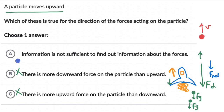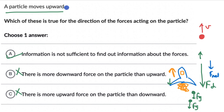So for this one, option A is the correct answer: information is not sufficient to find out the direction of forces. We saw that both cases are completely possible, and neither option B nor C will always be true when a particle is moving upwards. You can try more questions from this exercise in this lesson, and if you're watching on YouTube, check out the exercise link in the description.